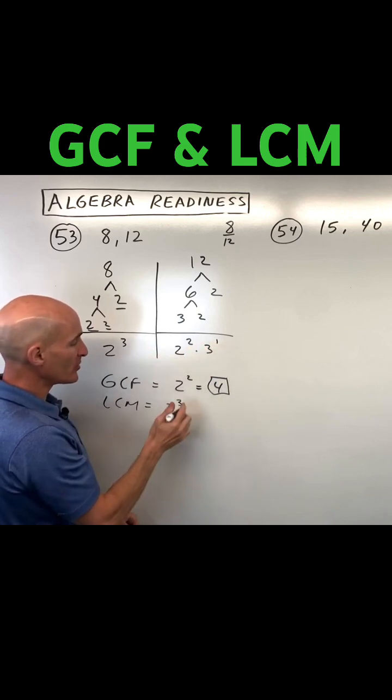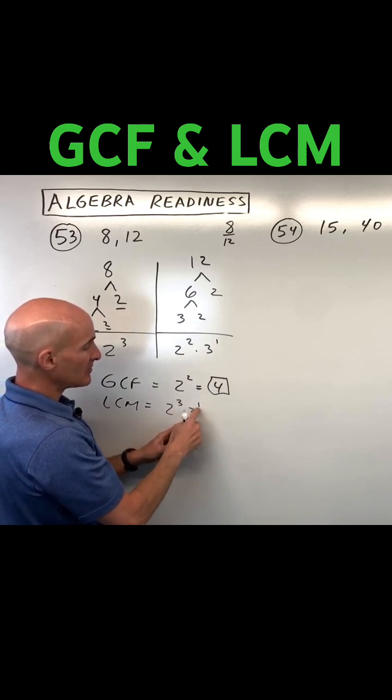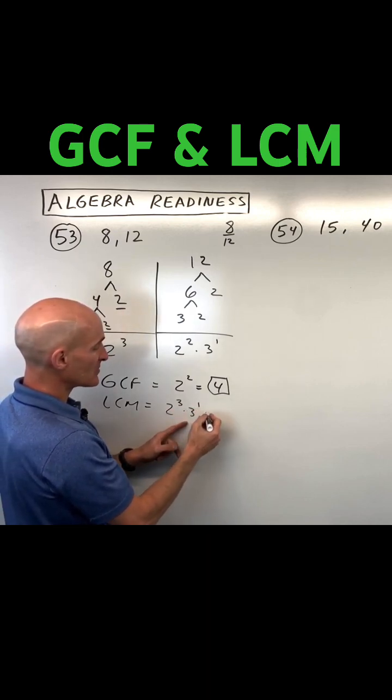One three, no threes, I take the one that occurs the most. Two cubed is eight, times three to the first, eight times three is twenty-four.